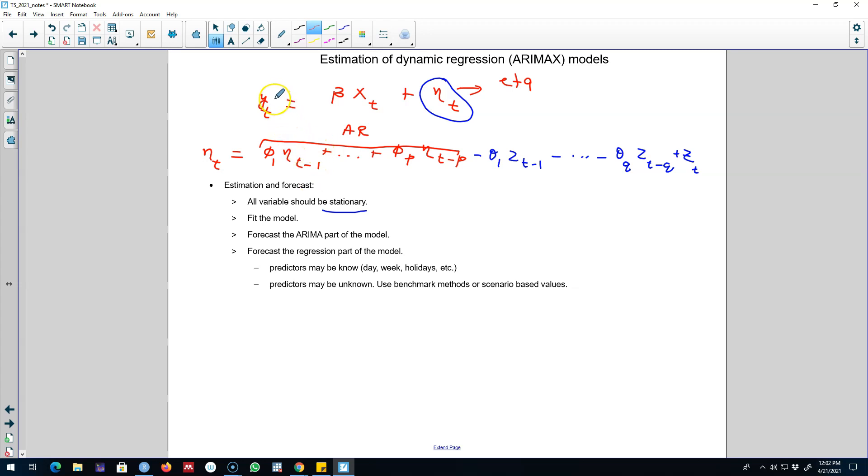And after we fit the model, because we have two equations, we have to work with these two equations separately. We'll forecast the ARIMA part of the model by forecasting this eta-t. And then we also have to forecast this regression part of the model. And remember to forecast y-t based on this x-t variable, we need future values of this x-t variable.